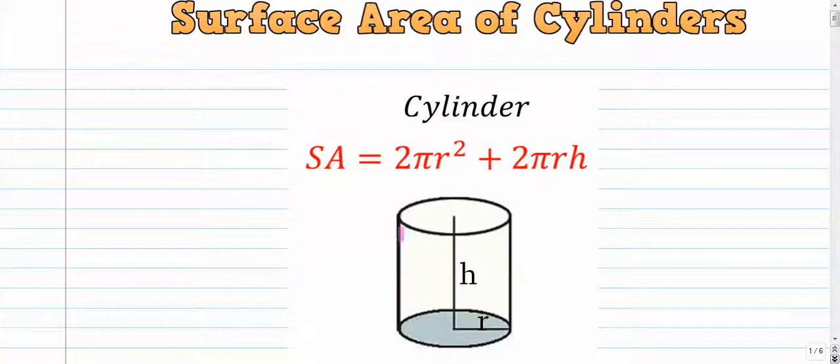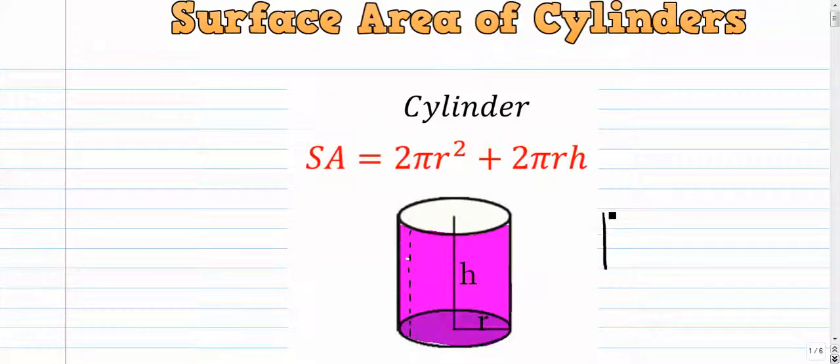Which means that everything else, what we'll call the lateral surface area, it's kind of like the label of this can of soup or something, that is 2 pi r times h. Now where does that come from? Well, if you think about it, if we were to take some scissors and cut right down, maybe right down there, and cut the circle off the top and the bottom, we'd be left with this net.